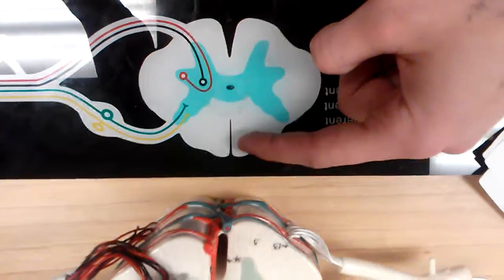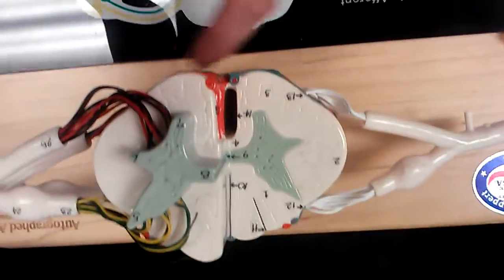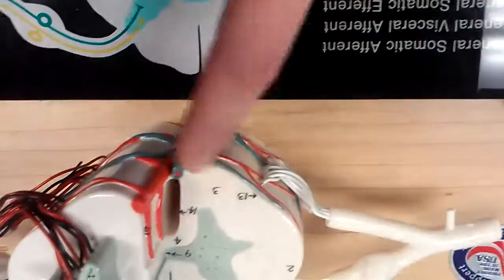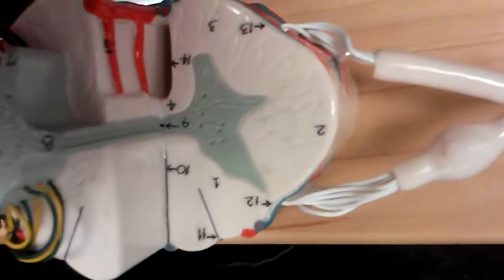This is the posterior median sulcus. Now on here you can see that too. This, in the front here, would be the anterior median fissure, and in the back, this line, that black line right there, would be the posterior median sulcus.